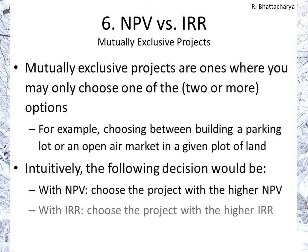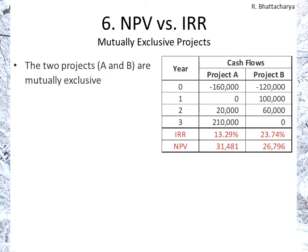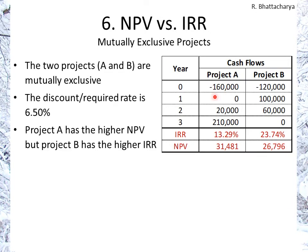Intuitively, if you use net present value you choose the one with the higher value; if it's internal rate of return you choose the one with the higher return. For example, Project A requires an investment of $160,000 and then expected cash flows of $0, $20,000, and $210,000. Project B has an initial outflow of $120,000 after which you receive $100,000 and $60,000 in years one and two. With a required rate of 6.5%, Project A will have the higher net present value. But Project B has a higher IRR of nearly 24% whereas Project A's is 13.3%.